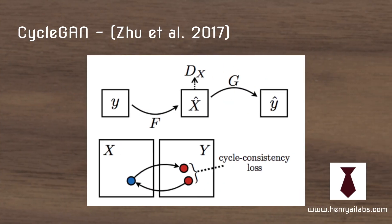The next paper on the list is CycleGAN. CycleGAN builds on the idea that if you go from French to English and then English back to French, you should arrive at the same sentence. They apply this same concept to further structure the adversarial loss in image-to-image translation tasks, such as zebra to horse.